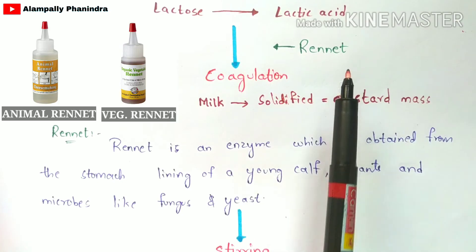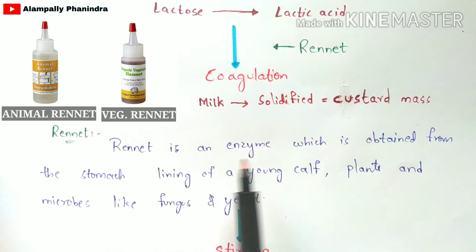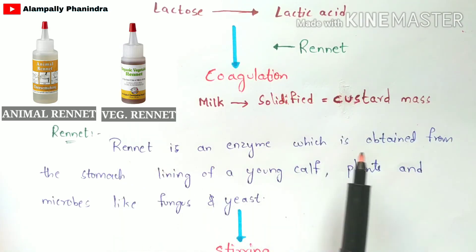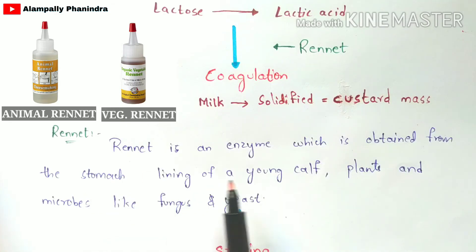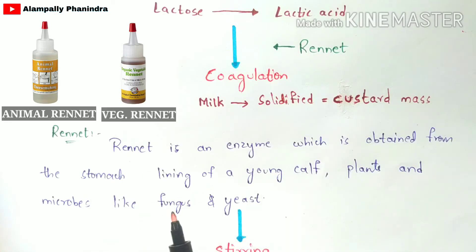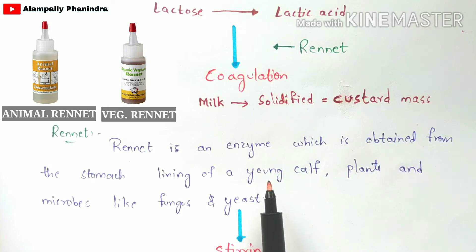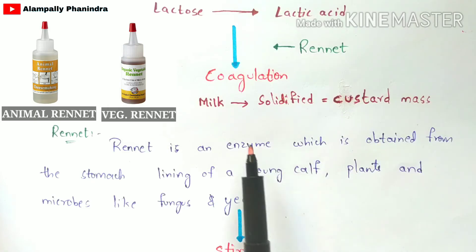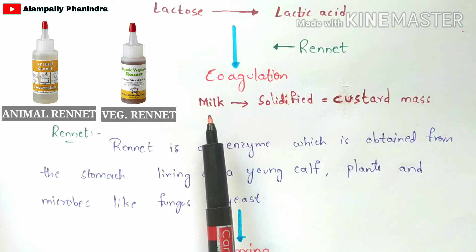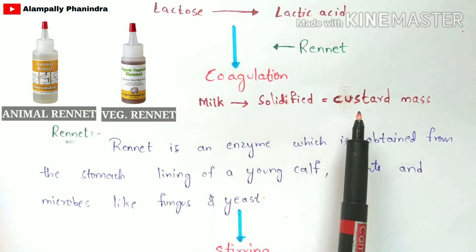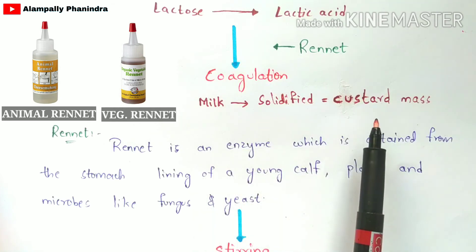What is rennet exactly? Rennet is an enzyme obtained from the stomach lining of a young calf, plants, and microbes like fungus and yeast. From these organisms, rennet is obtained. It is a type of enzyme mainly added into the acidified milk such that it converts the liquid form of milk into solid form, forming a custard mass.